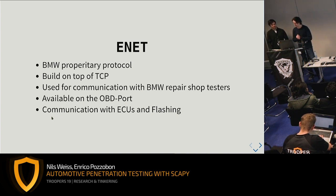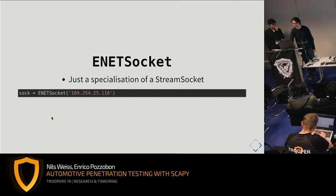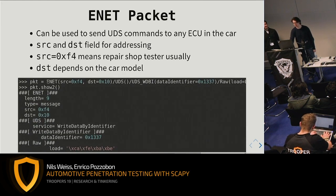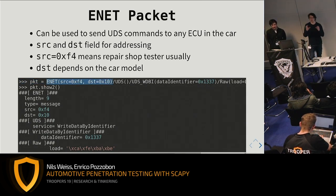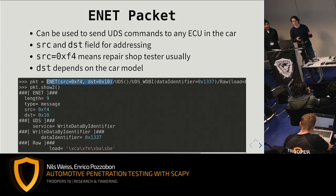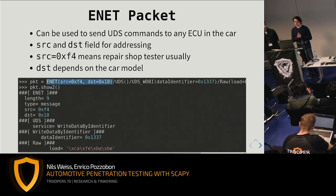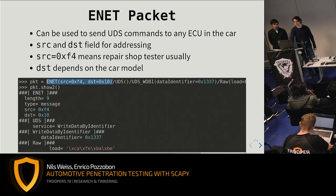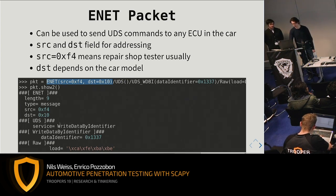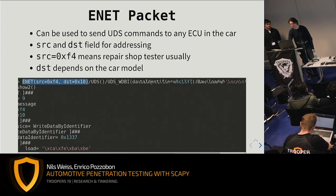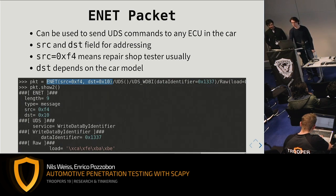ENET is a diagnostic interface protocol from BMW. The main thing is you can use an ENET packet to encapsulate UDS packets. On a BMW car's OBD interface, you have Ethernet and can send Ethernet messages to the car. Pack them into an ENET packet, then send all the UDS messages you already know — for example, read data by identifier or write data by identifier. It looks the same: wrap an ENET packet and stack it together with UDS and write data by identifier.